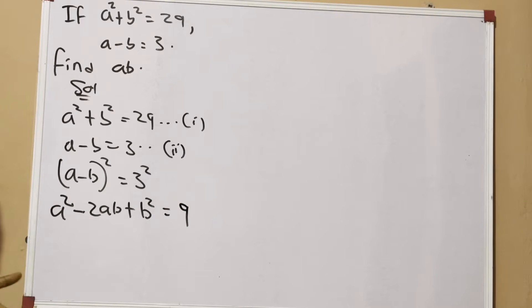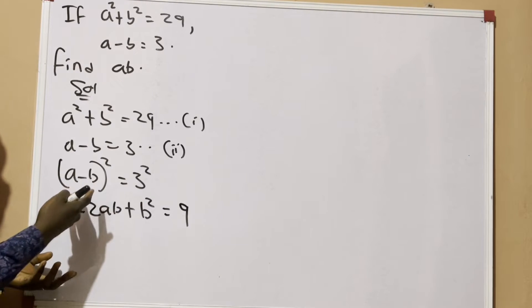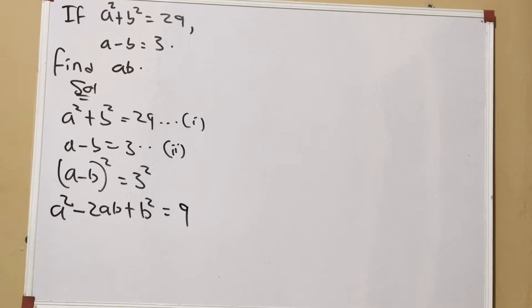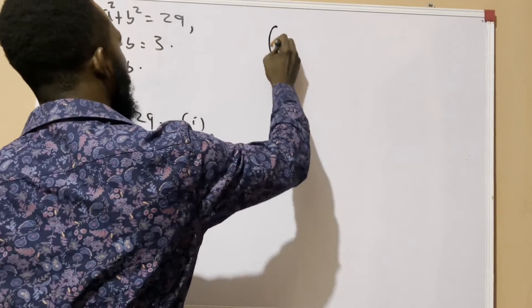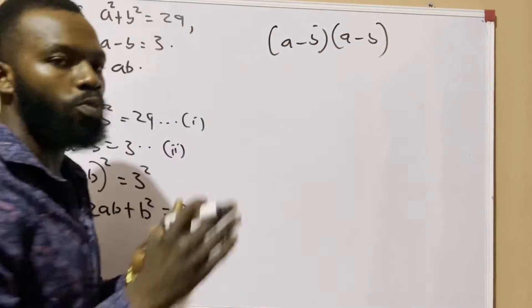But in case you don't know how I got this, (a - b)² simply means (a - b) and (a - b) into two places because of the square. Now if I should expand this is what I'm going to do...